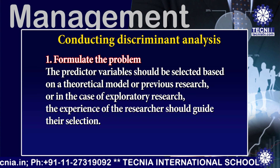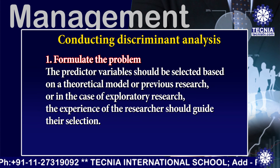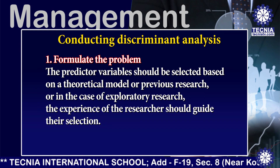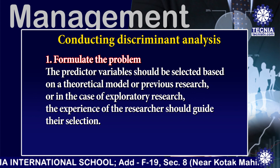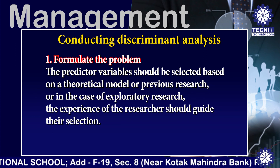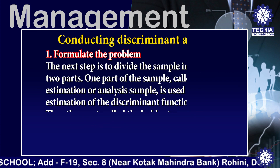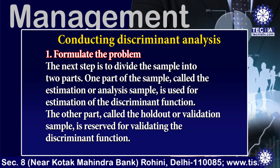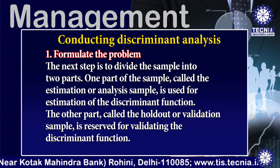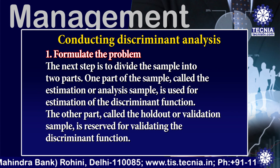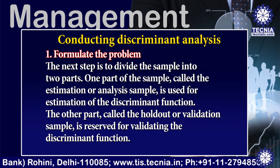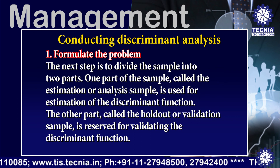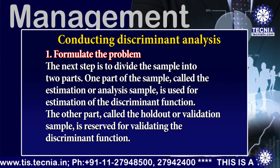The predictor variables should be selected based on a theoretical model or previous research, or in the case of exploratory research, the experience of the researcher should guide their selection. The next step is to divide the sample into two parts: the estimation or analysis sample, used for estimation, and the holdout or validation sample, reserved for validating the discriminant function.